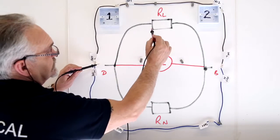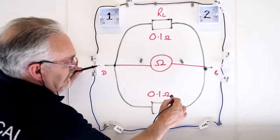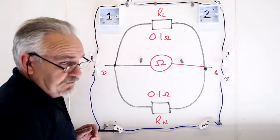So I have a resistance of my line in parallel with the resistance of my neutral. They're both the same value.